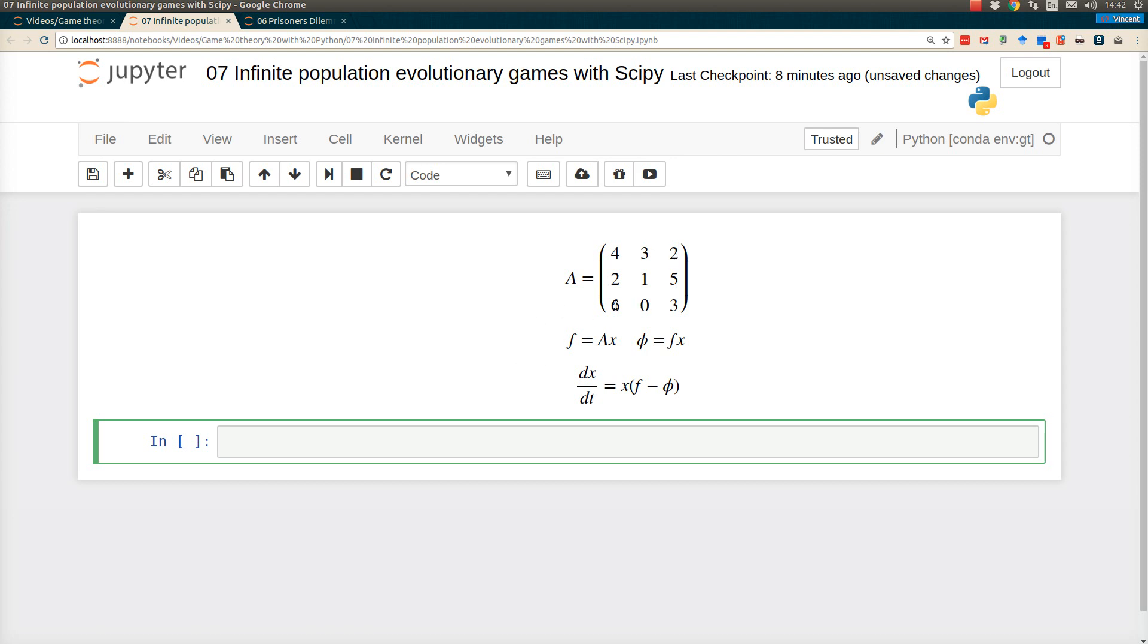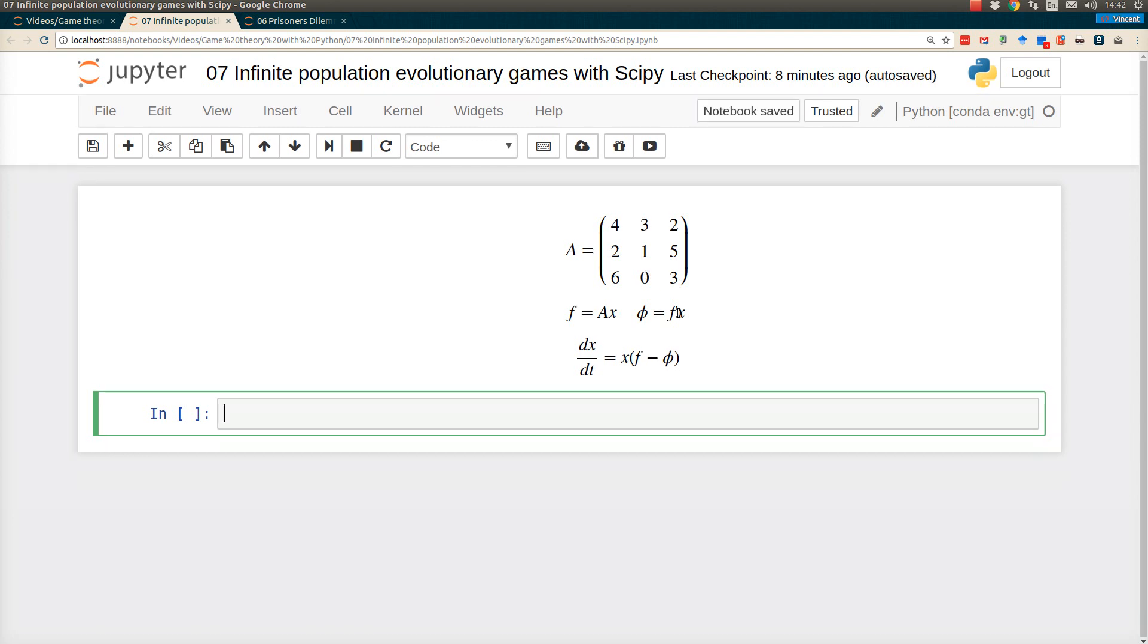For example, a third strategy, if they meet a first strategy, they get six, zero, and three. Then we can ask what happens over time if a strategy reproduces based on how well they do, based on the utility they get, which is dependent on the density of the population. But also strategies die, so we have a constant total population. These little equations describe this.